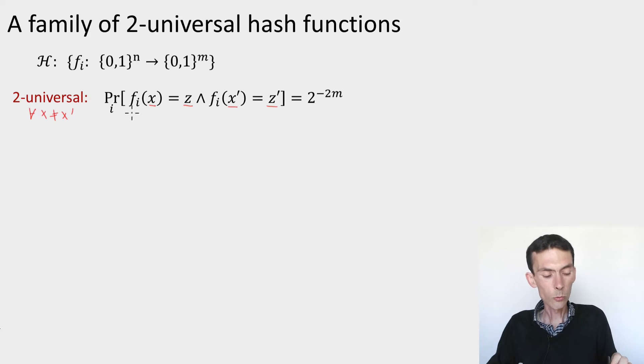Then the probability when I choose a random hash function that it maps x to z and x prime to z prime, this should be the same as the probability you'd get if the outputs were completely uniformly distributed, so 2 to the minus 2m.